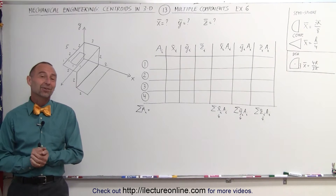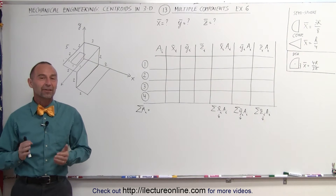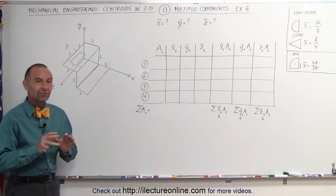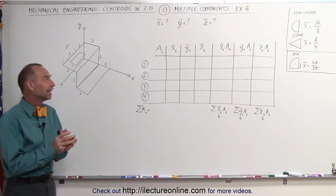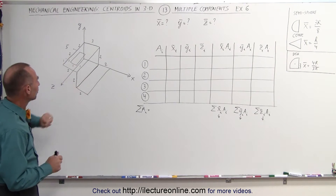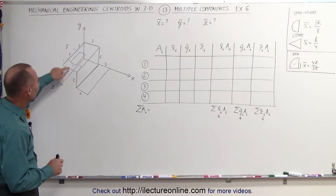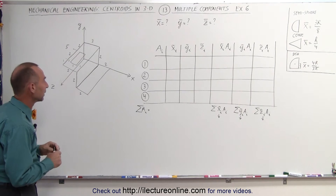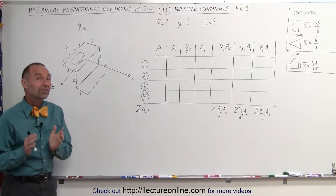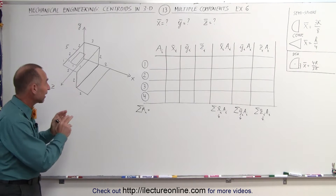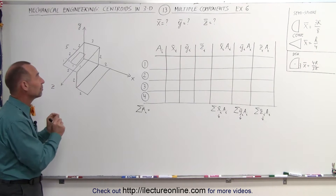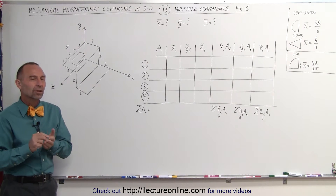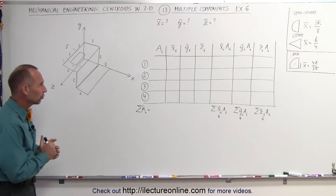Welcome to ElectronLine. Here's our next example of how to find the centroid of an object. In this case, it's not a volumetric object — it's a bracket that's bent into different shapes and has a rectangular hole cut out. We're trying to find the centroid of it. Instead of finding the volume of each piece, we're simply going to find the area of each piece. That will work as well.